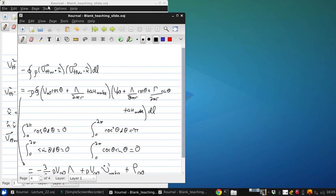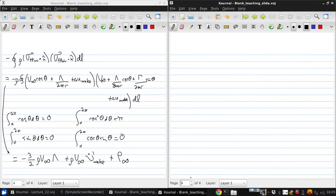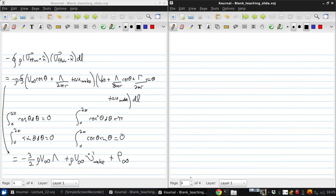P prime wake plus P infinity. Here what we see is that P infinity has been written as rho times the integral in the wake of V infinity